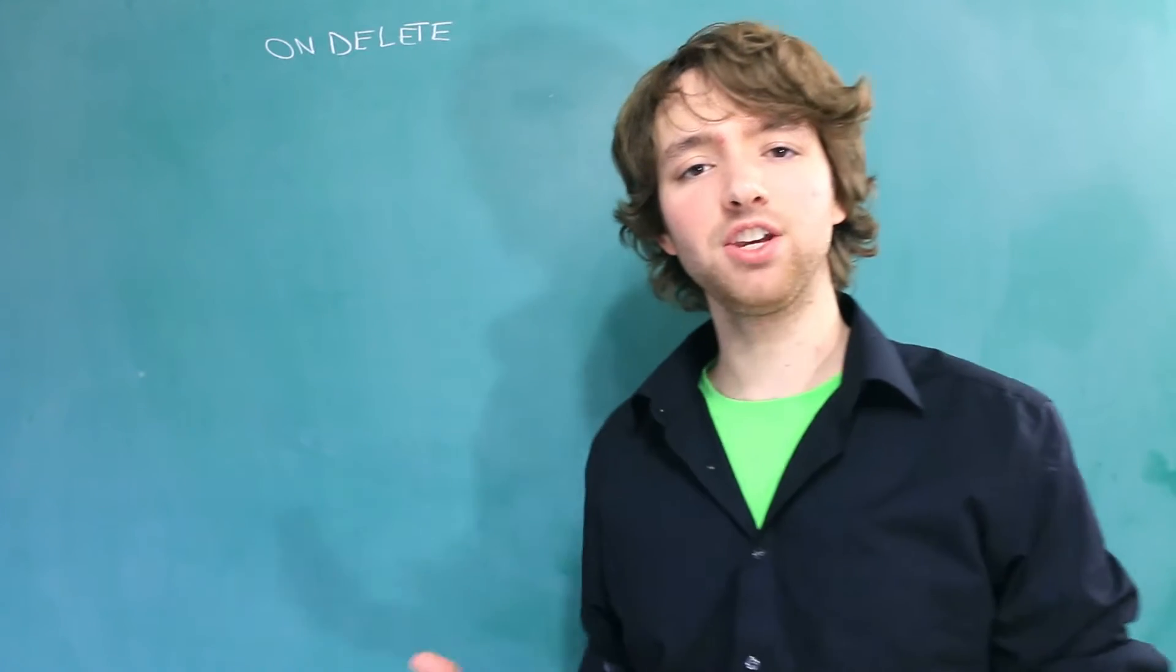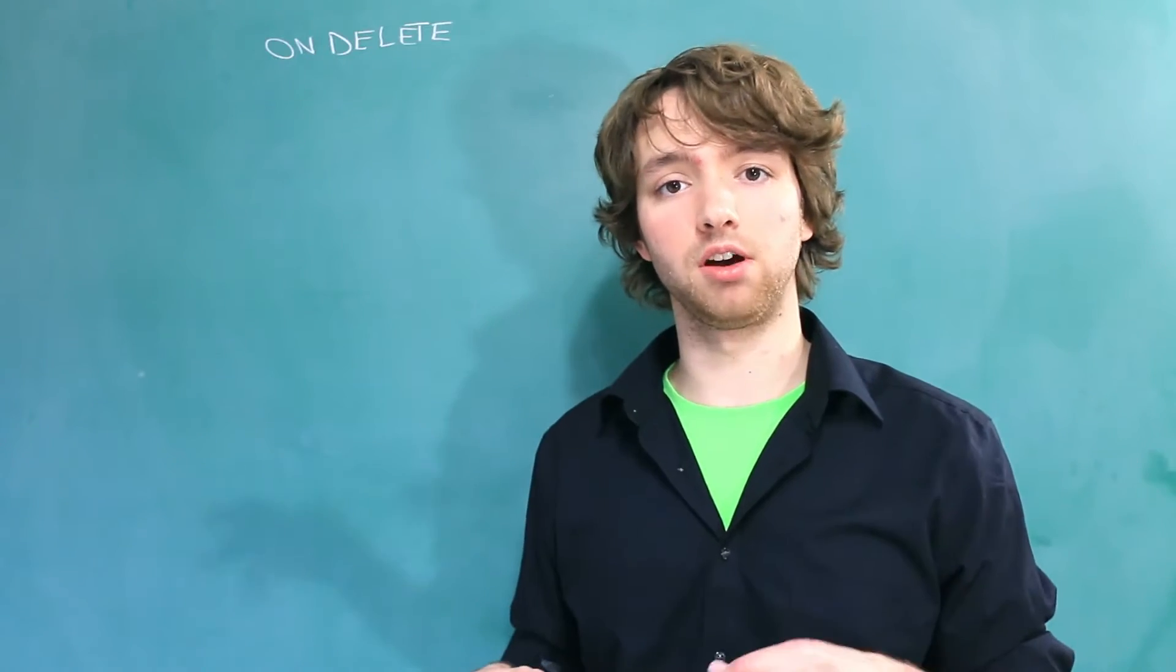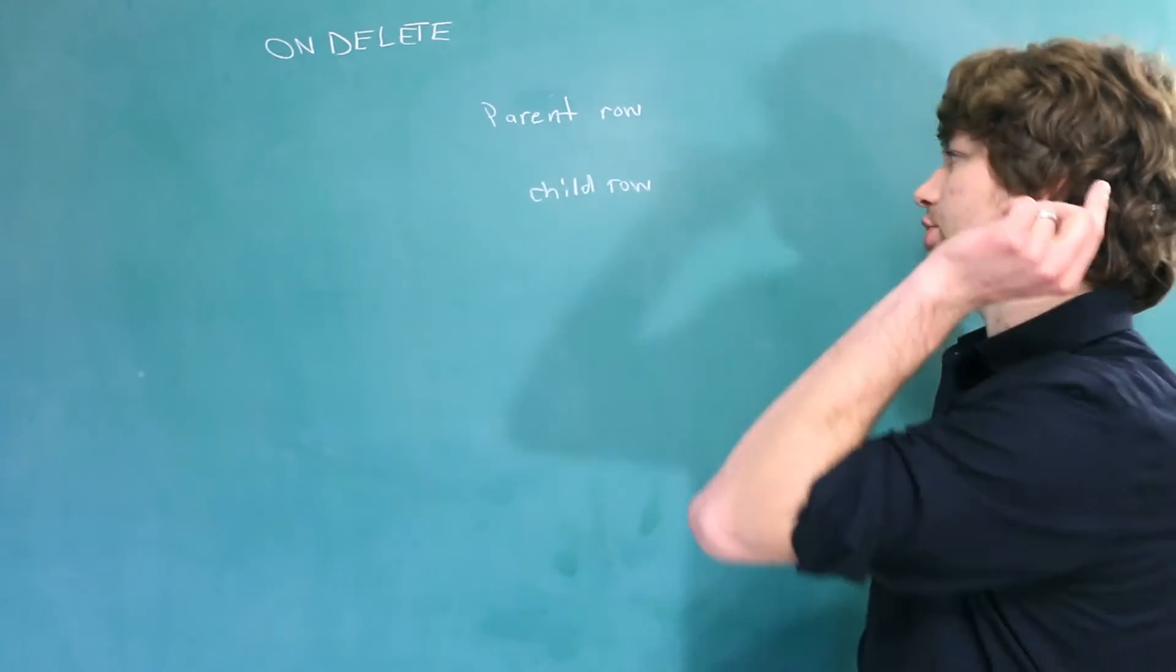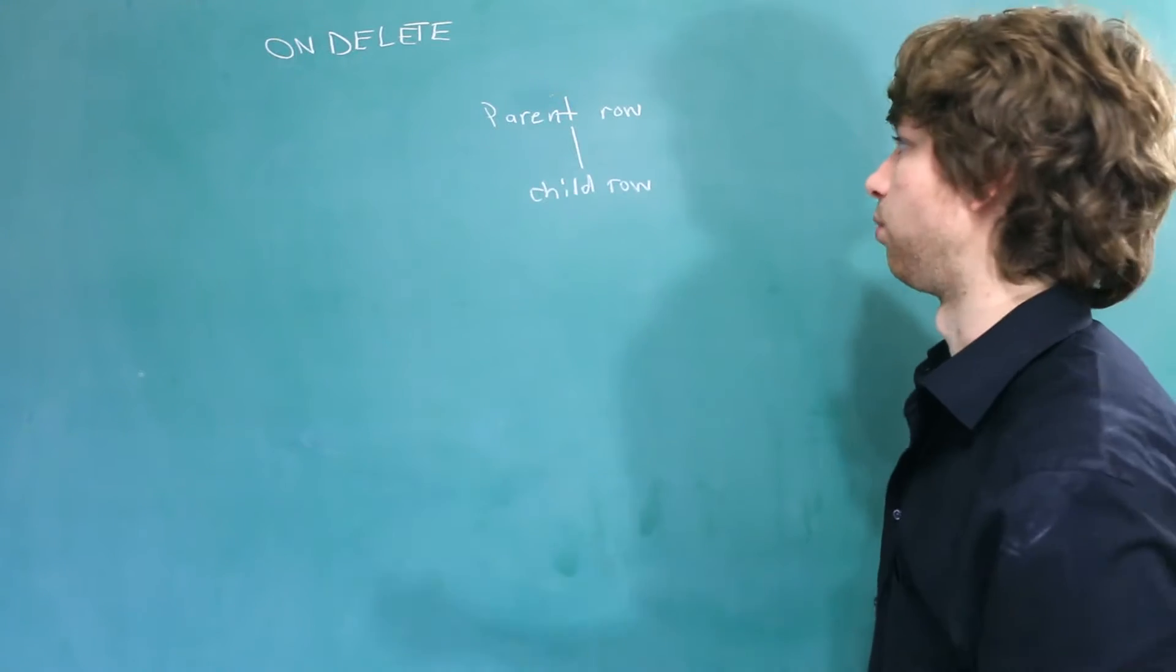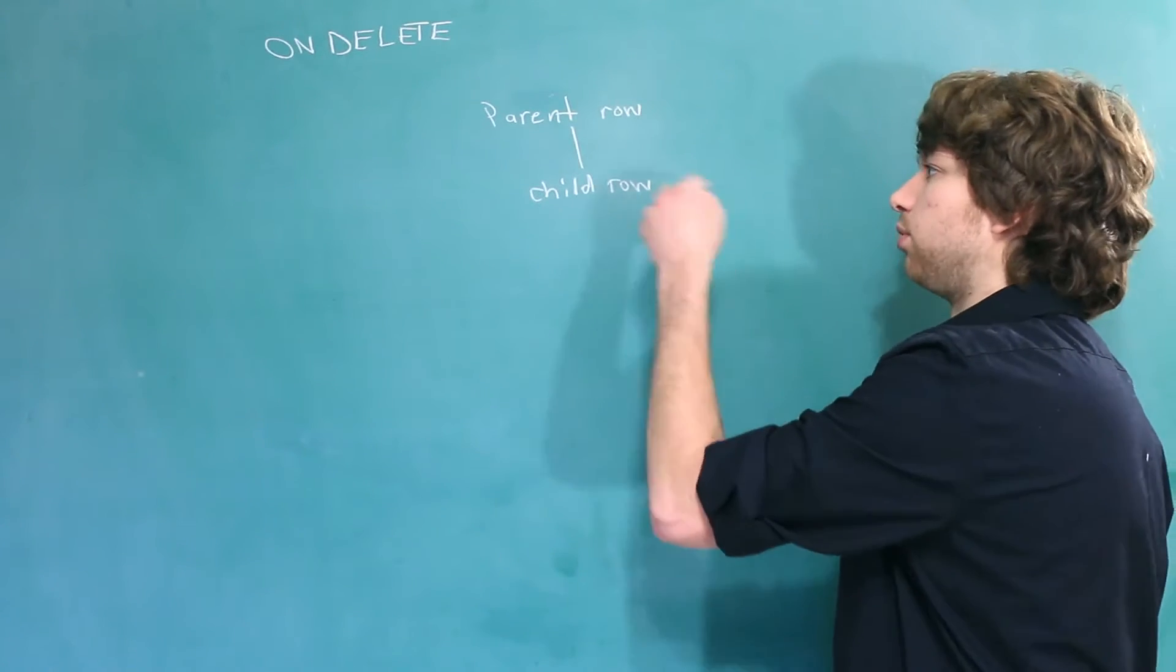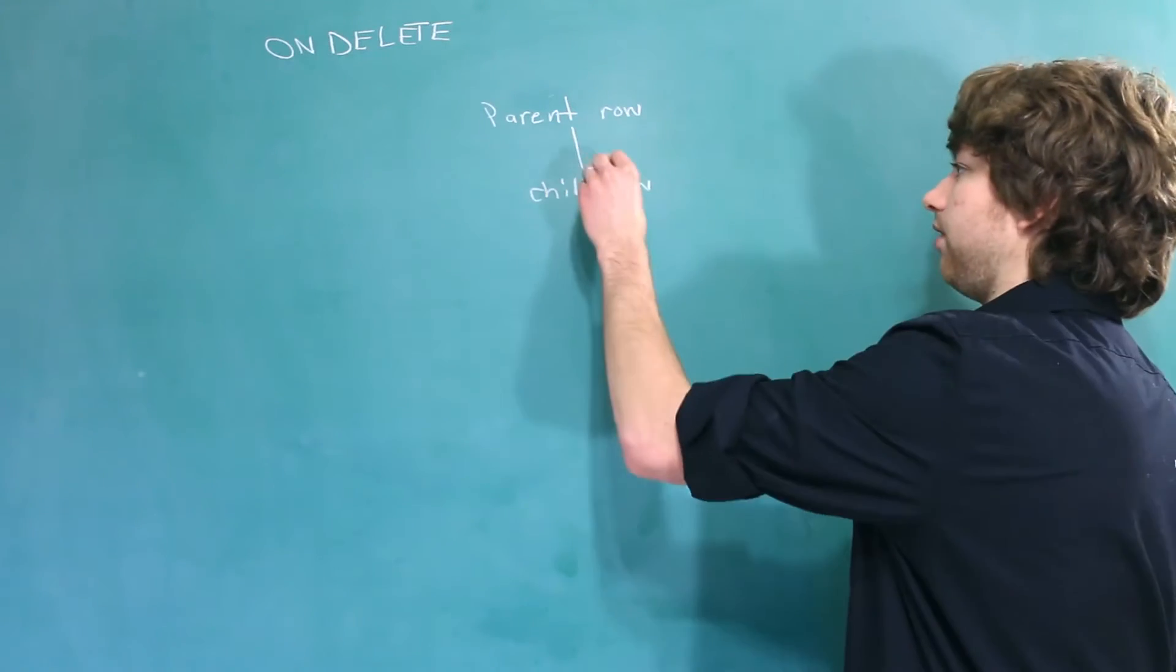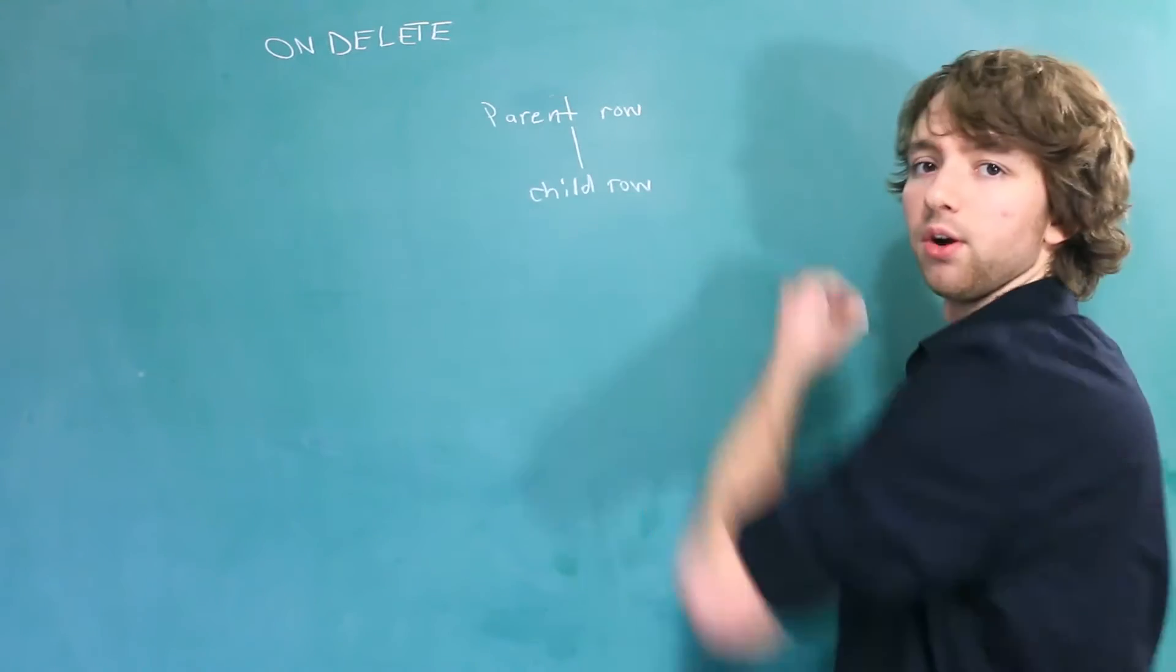ON DELETE is a way we can configure how our foreign key works. So let's go back to the parent-child relationship concept from the last video, which is basically a prerequisite to this video. We have a parent row and a child row, and this child row references the parent using a foreign key. So this table will have a column such as ID, and then this table will have parent ID, whatever the parent is, so it could be like user ID or whatever, and then that value references the parent. But what happens if we try to delete this parent row?